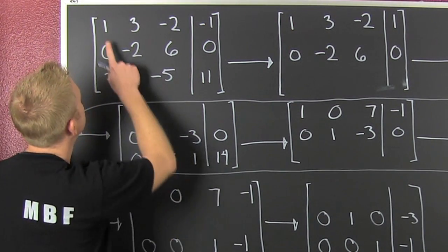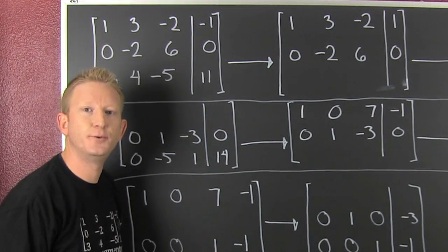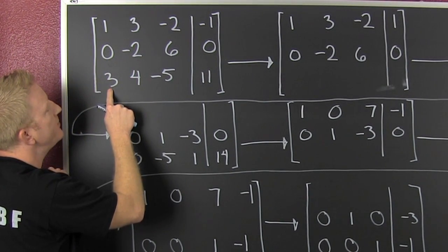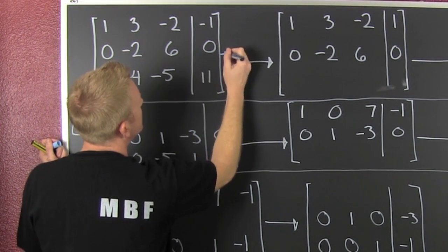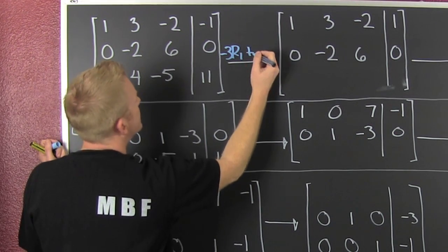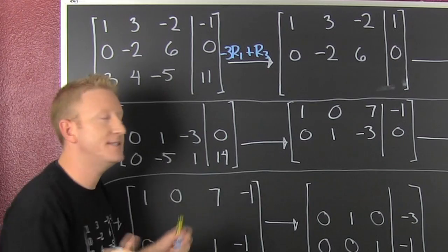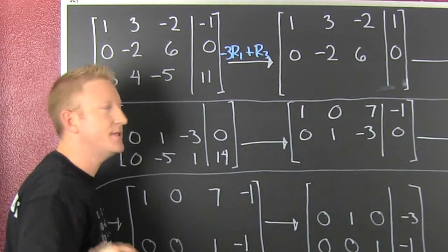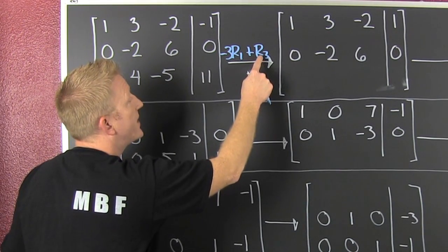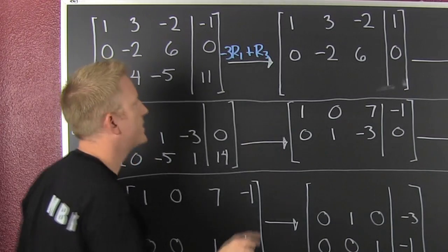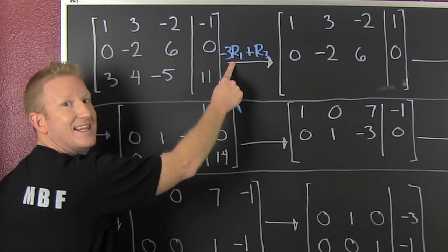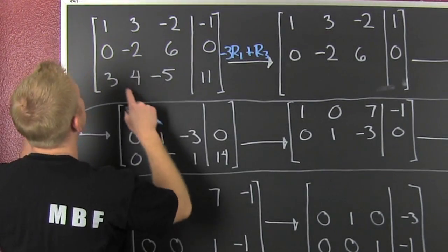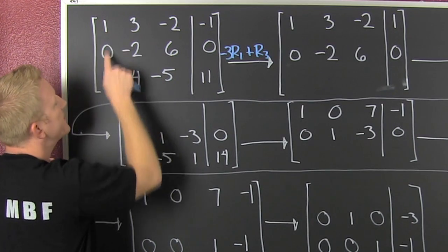Step 1: get a 1 in row 1, column 1. Gift — it's already there. Step 2: kill the rest of that column. That one's already a 0, but how do I get that 3 to be a 0? It's minus 3 times row 1 plus row 3. We're trying to get additive inverses with that 1 so that when we add it to 3, it's gone. This is the row that is changing. I used row 1 but left it alone. Minus 3 times row 1 is minus 3, plus 3 is 0.